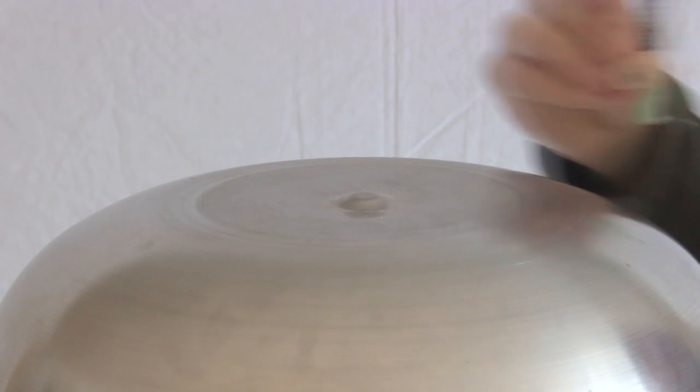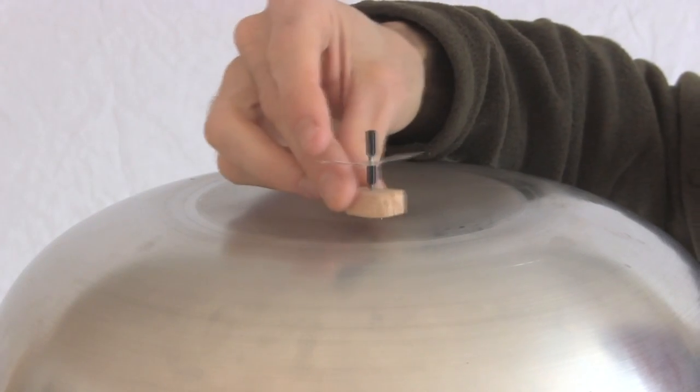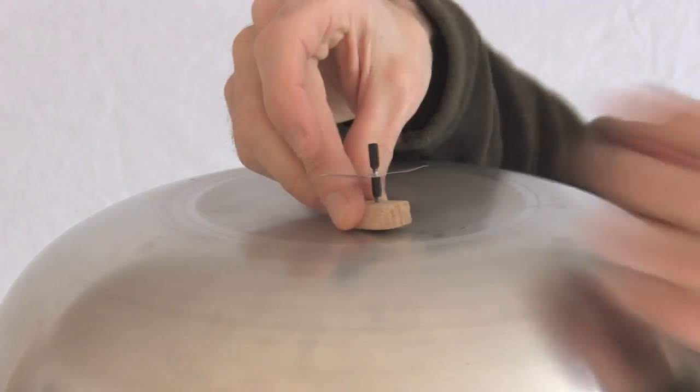And finally tape the whole thing to the top of the Van de Graaff generator. Notice that the head of the nail makes electrical contact with the surface of the dome.